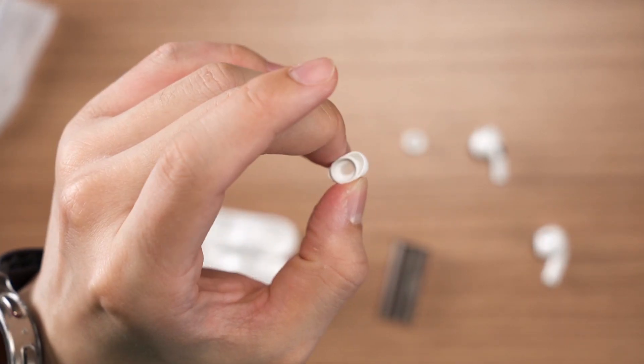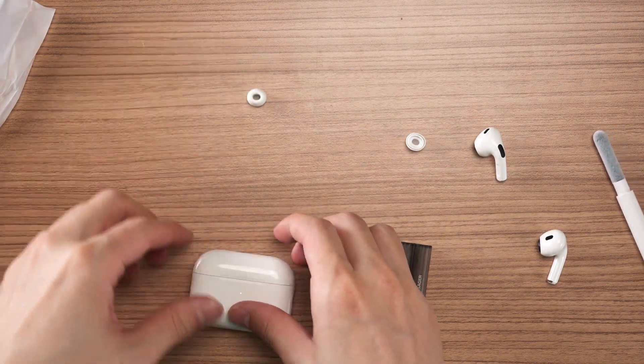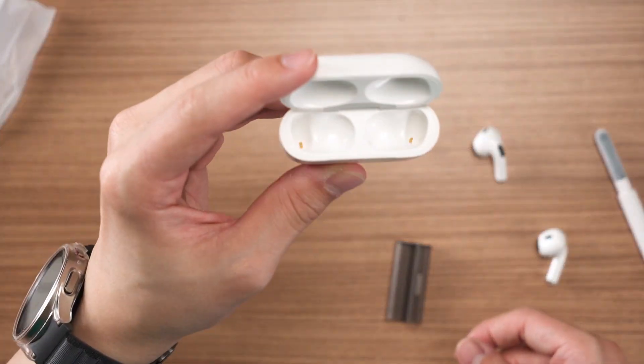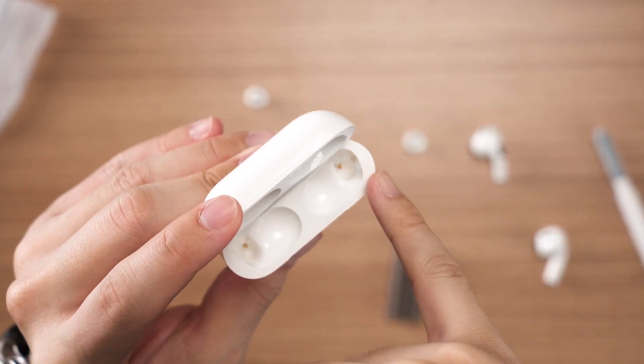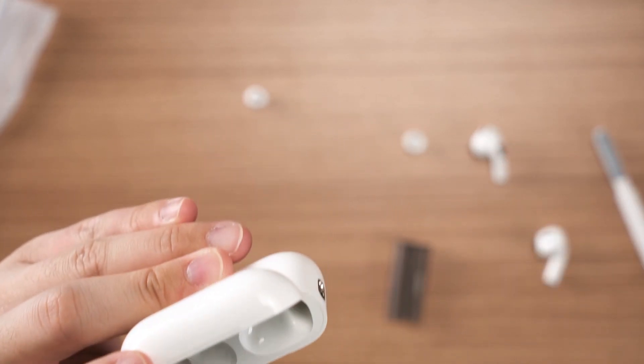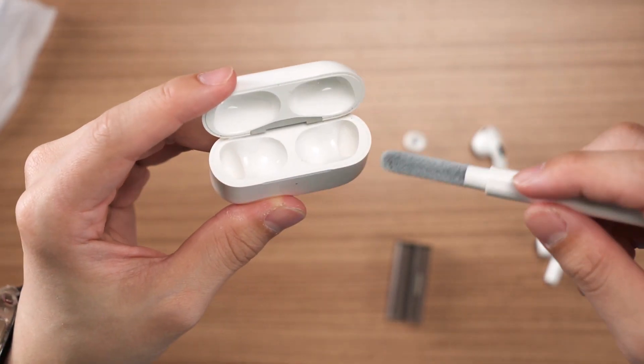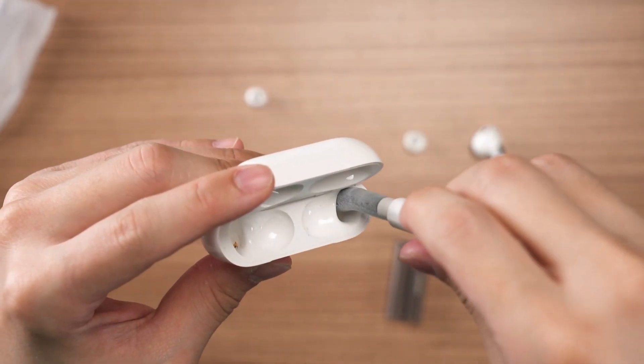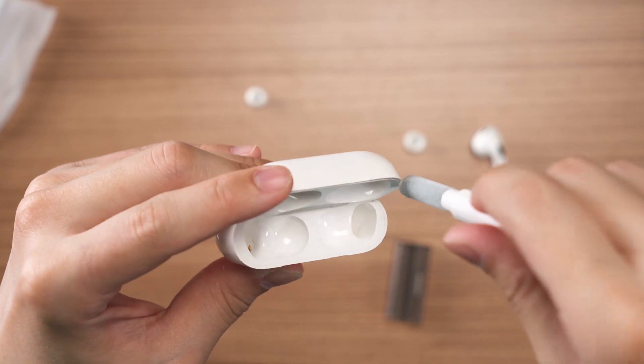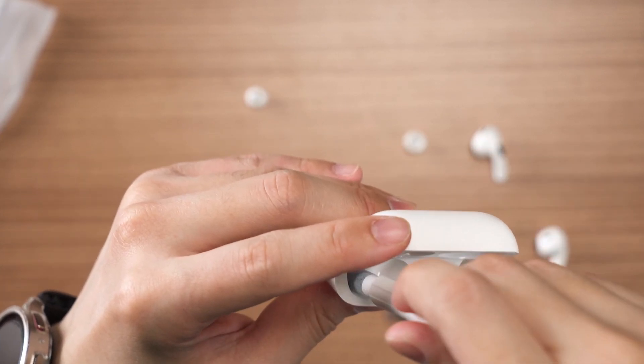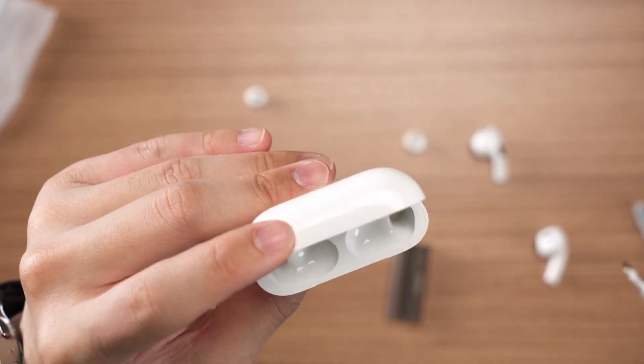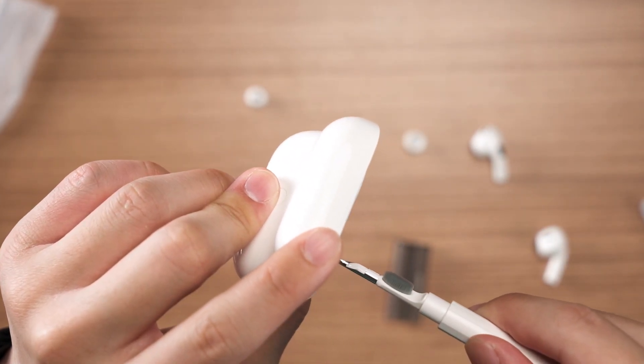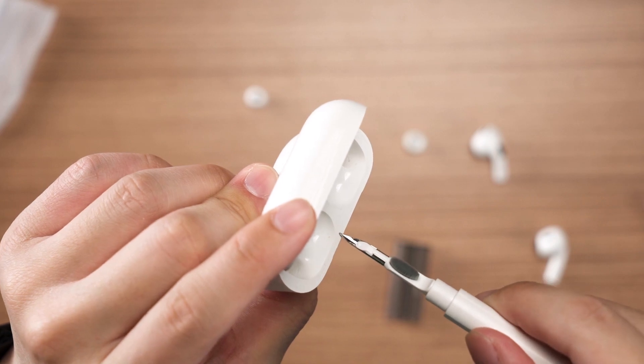There we go. This is now clean. And for this charging case, as you can see, there are some earwax around this hole here. What I'm going to do is to take this thing again. That's pretty clean, but not entirely clean. As we can see, there are still some earwax around this wall here.